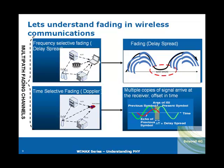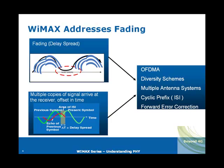Mobile WiMAX addresses these fading phenomena through inherent technologies. One of them is diversity schemes — when you have multipath fading, multiple receivers or diversity schemes help reduce fading. MIMO with space-time block codes is one technique to reduce fading. OFDMA has mechanisms to take care of fading, and inter-symbol interference can be countered by cyclic prefix, which reduces inter-symbol interference.